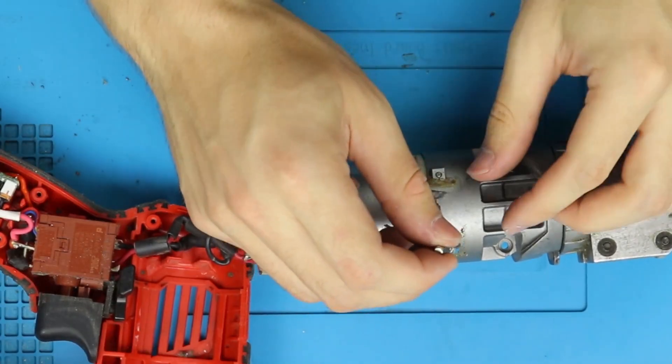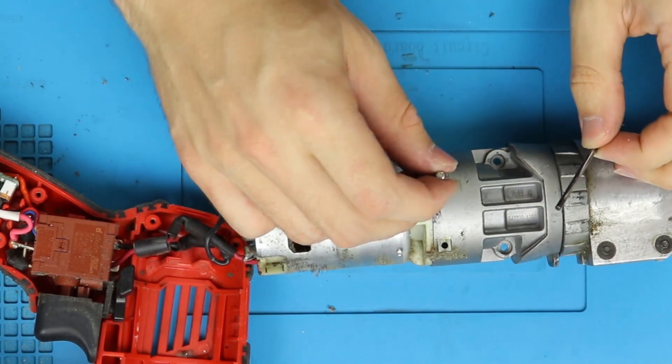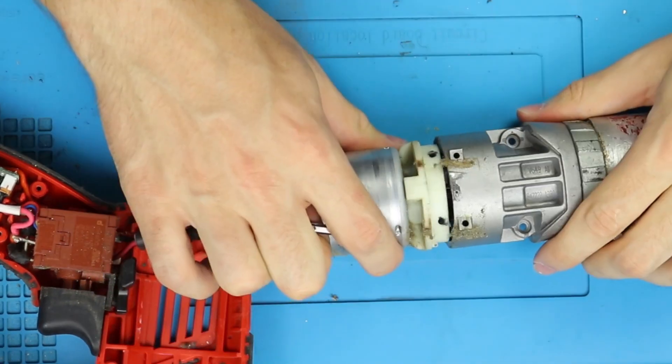With the case open, we'll need to separate the motor from the shears. To do that, we'll need to remove the pins connecting them using a magnet.